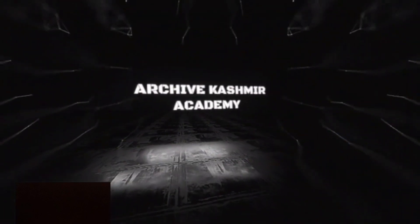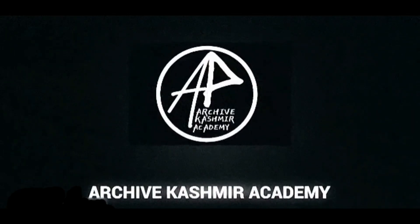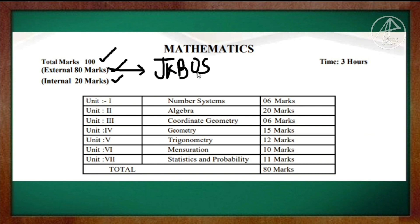The subject has external marks and internal marks. The external mark is 80 marks — this is the JK Board paper, which conducts the final exam for 80 marks. The internal mark is 20 marks. So the total is 100 marks.